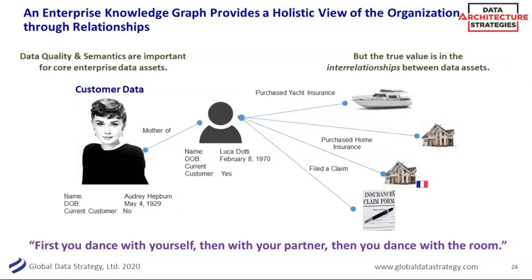The more you can make those connections across your enterprise — that's the dancing with the room. To me, that's the knowledge graph. You can look holistically across different data sets without a particular lens in mind — you don't know the answers yet, but you can see some of those patterns. The Audrey Hepburn example: I know which Audrey Hepburn I'm talking about from my structured data. I know the Audrey Hepburn born May 1, 1929. She's not a current customer because she's deceased. But she has a son, born in 1970, who is a customer. He owns the fancy yacht she purchased. Did we ever know that? That's the kind of rich interconnection you can get by connecting data sets with graphs.